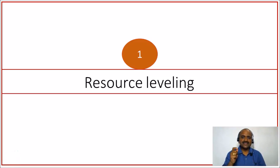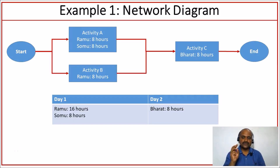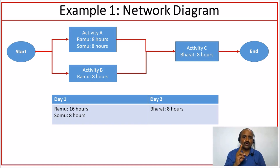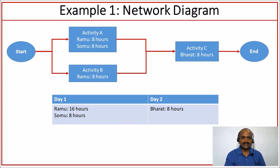Let us understand what resource leveling is using a simple example. Our example consists of three activities: Activity A, Activity B, and Activity C. Activity A is loaded with two resources, Ramu and Somu. Ramu is planned for eight hours and Somu is planned for eight hours on Activity A. The critical resource Ramu is also planned for eight hours on Activity B. On Activity C, Bharat is loaded for eight hours. This is the simple network diagram we have.